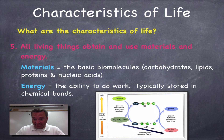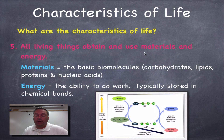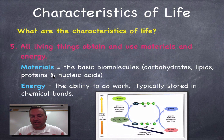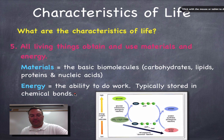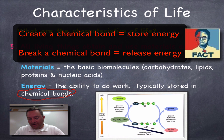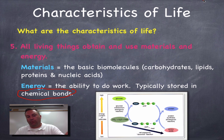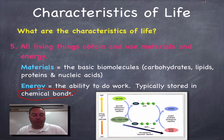Number five: all living things obtain and use materials and energy. The materials are the basic biomolecules — carbohydrates, lipids, proteins, and nucleic acids — essentially food. Living things need to take in food, which contains energy. Energy is the ability to do work and is found in chemical bonds. When your body stores energy, it makes chemical bonds; when it needs to use energy, it breaks those bonds. We'll cover this in chapter two, which begins right after this one.